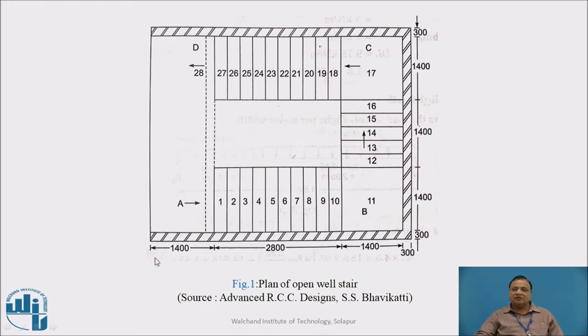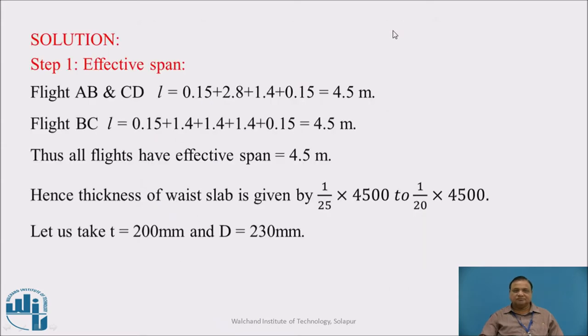This is a plan showing arrangement of steps. Flight AB is the first flight with treads 1, 2, 3 up to 10, and 11 is quarter landing. Then BC flight is perpendicular to the hall, with treads 1, 2, 3, 4, 5 - five treads are there, and again a landing. CD is the third flight. So AB and CD are similar whereas BC is different.